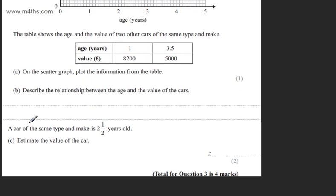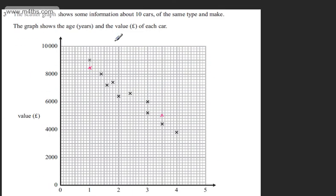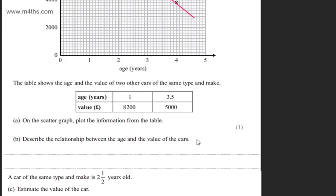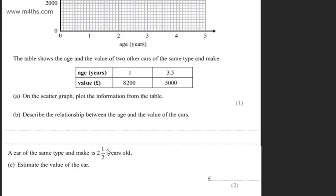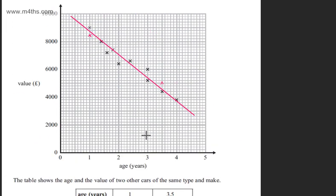A car of the same type and make is two and a half years old. In part C for two marks, we need to estimate the value. I'm going to draw a line of best fit through approximately the middle of these points. We want to find the value of the car aged two and a half years. I'll go up from two and a half years old—two and a half is about there.